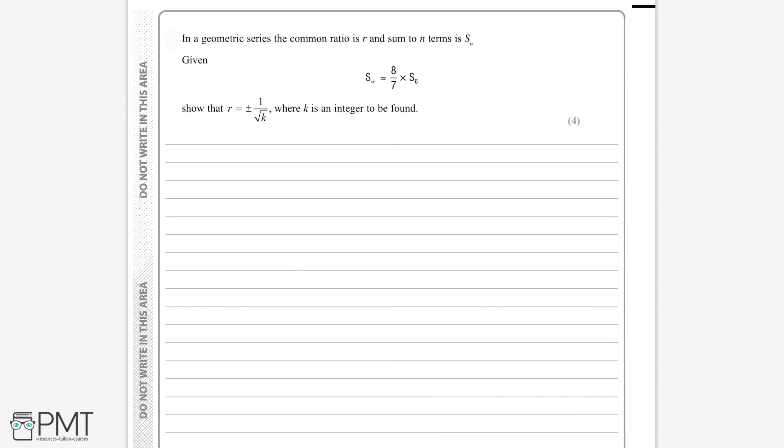So first of all we need to write down the equation for the sum to infinity of a geometric series and the sum of the first n terms of a geometric series. So the sum to infinity formula can be written as a divided by 1 minus r, this is just a formula you have to learn. And similarly the sum to n terms, there are two formulas for the sum to n terms of a geometric series, and they are exactly the same but they're just a bit easier to use if r is greater than or less than 1. But since we don't know the value of r, we can't pick which one, so it doesn't really matter which one we can use. So if we use a multiplied by 1 minus r to the power of n, all divided by 1 minus r.